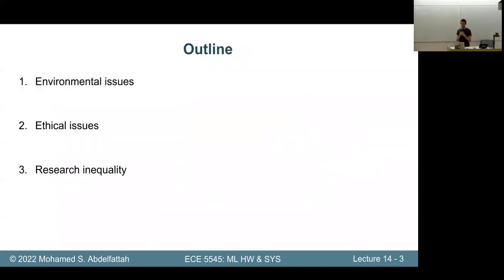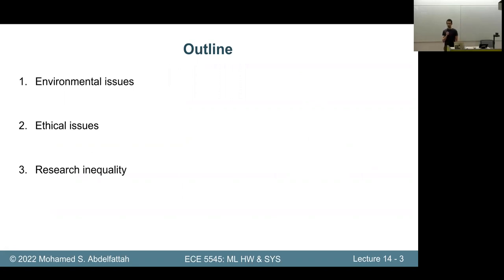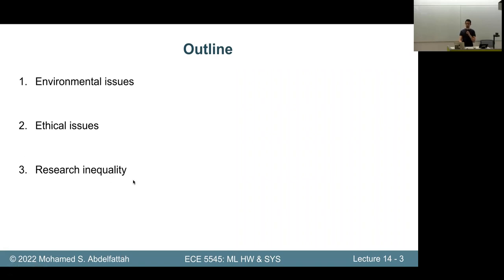We will talk about environmental issues first. This is becoming well-studied in computer architecture broadly, and definitely when it comes to AI because of the huge energy demands for training state-of-the-art models. Then we'll touch upon ethical issues, and finally we'll talk about research inequality — how access to expensive computers to produce AI systems is not currently equitable, and very few people actually have that capability.